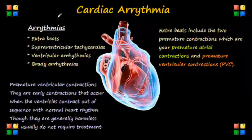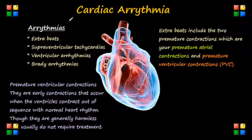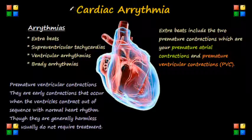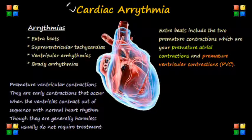Today we will talk about dysrhythmia. First, let's take a look at cardiac dysrhythmia, or what is also known as cardiac arrhythmia, or what we call an irregular heartbeat. This can be a group of conditions in which the heartbeat is irregular, which means it can either be too fast or too slow.